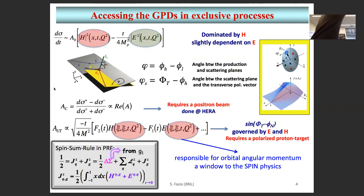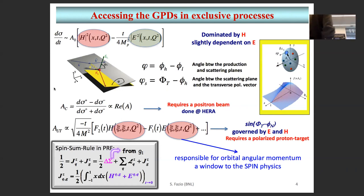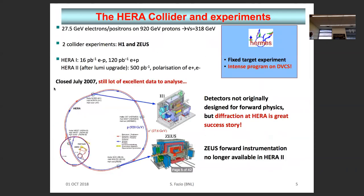HERA actually measured at least one charge asymmetry measurement, because we had electrons and positrons at HERA. This is a nice way to access the real part of the scattering amplitude. There was a time we discussed having positrons at the EIC too; that discussion ended at a certain point, but I'll just leave that as a note.